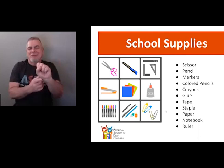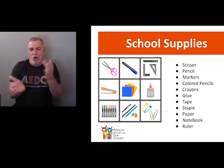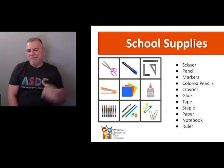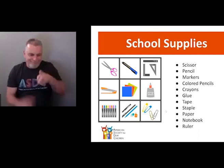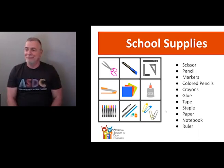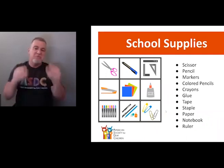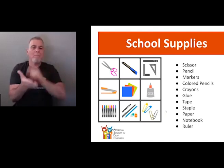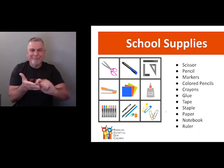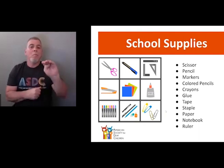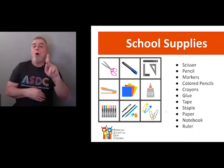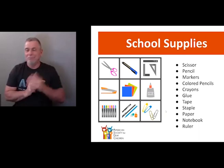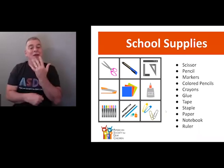Some school supplies — this is supplies, which I'm fingerspelling: things or materials. If you sign school before the next one, context tells us you're talking about school supplies. Scissors — V handshape and then the movement. Pencil — like you're holding a pencil, or come down from your mouth, since a long time ago people used to wet the lead tip — that's typically how we sign pencil. Marker — you would fingerspell that. Colors — color pencil.